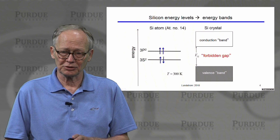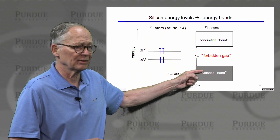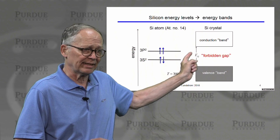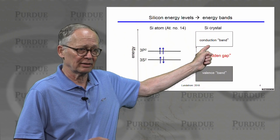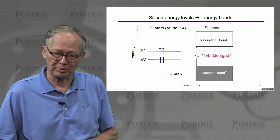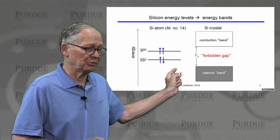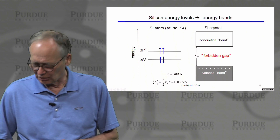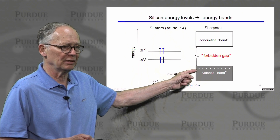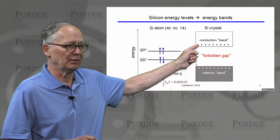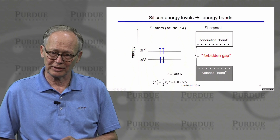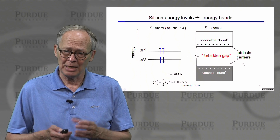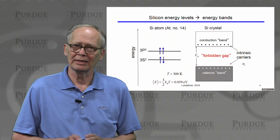These two valence energy levels become valence bands and conduction bands in the semiconductor. At T equals zero, the valence band is completely filled with electrons that are participating in the covalent bonds. The empty states that arose from these unfilled P levels occur in the conduction band, and there's a forbidden gap — no states for electrons to occupy in that gap between the valence band and the conduction band. At 300 Kelvin, there is a little bit of thermal energy, enough that a small fraction of covalent bonds can be broken. Those broken bonds lead to holes in the valence band and electrons in the conduction band. We call these intrinsic carriers, labeled with the symbol n sub i.